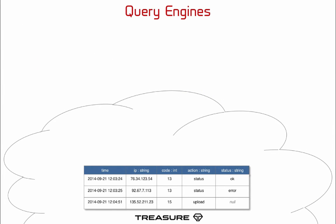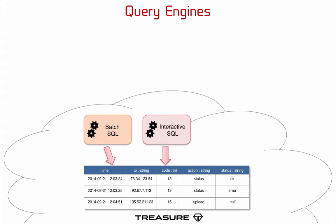Once data is in the tables, TreasureData provides multiple query engines to access and analyze the data. There is a batch-oriented SQL query engine, which is really good at very large queries often used for data transformation or large aggregations. There is an interactive SQL query engine, which is better for smaller, more focused queries that you would typically execute and wait for the results. And there is a batch-oriented Pig Latin engine for jobs where you want more control over how the job is executed. You do not have to pick the query engine before collecting data — you just choose the query engine when you run the query. All query engines work on the same tables, and you can run queries using different query engines on the same table at the same time.